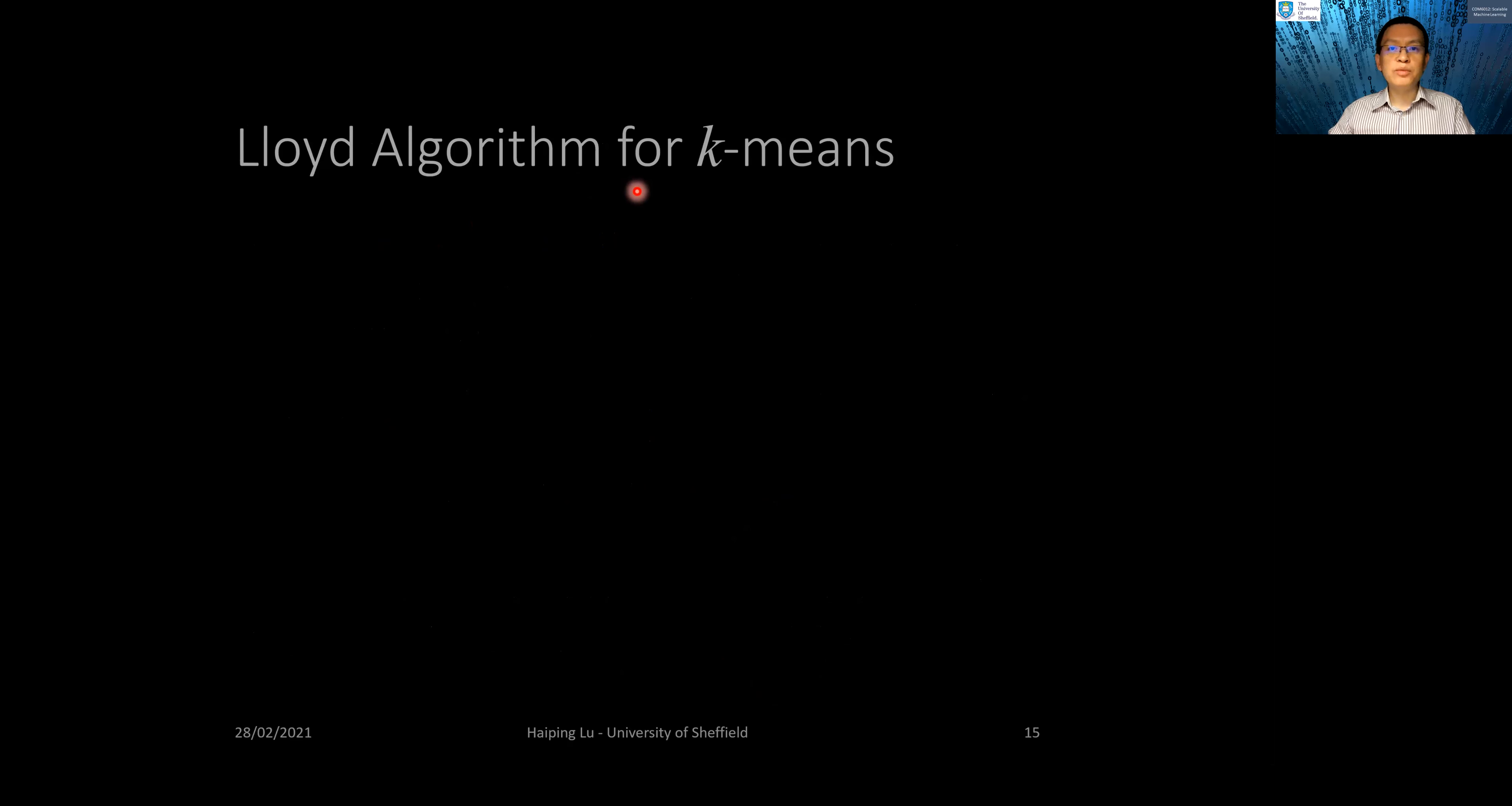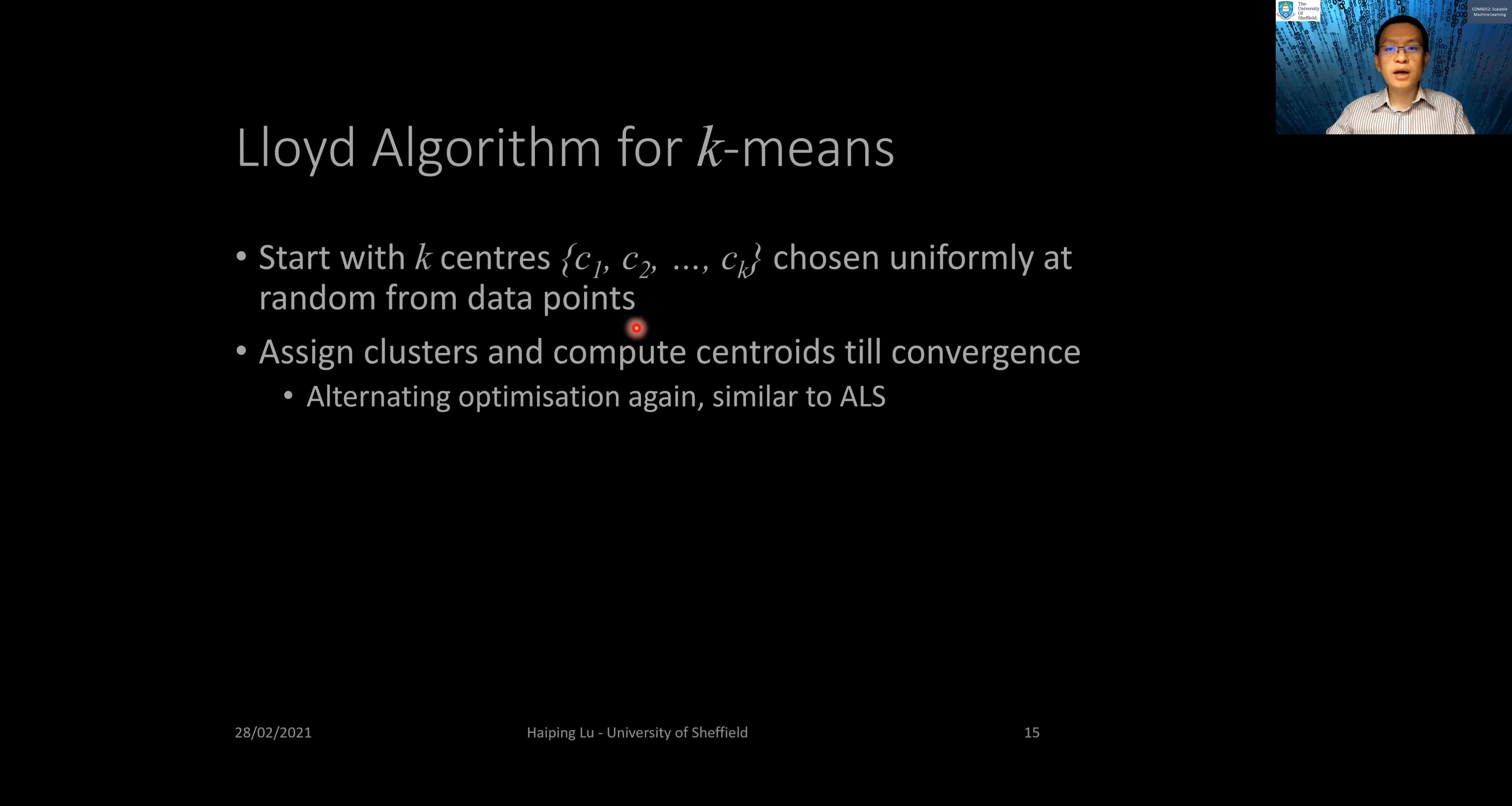The algorithm we have seen for k-means is called Lloyd's algorithm. In this simple algorithm, we start with k centers chosen uniformly at random from the input data points. Then we do assignment of clusters to each data point and recompute the centroids alternately.